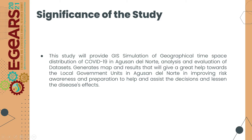Significance of the Study. This study will provide GIS emulation of geographical time-space distribution of COVID-19 in Agusan del Norte, analysis and evaluation of datasets, and generate maps and results that will greatly help local government units in Agusan del Norte in improving risk awareness and preparation to assist decision-making and lessen the disease effects.